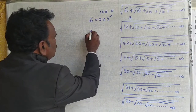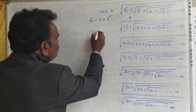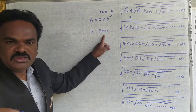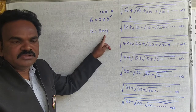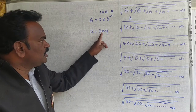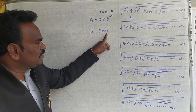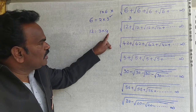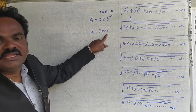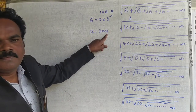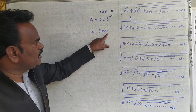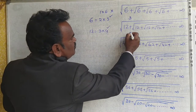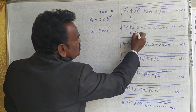Now these numbers are 12. You can write 3 into 4 — two consecutive numbers, product is 3 into 4. So what is the big number? Your answer is 4. This answer is equal to 4.